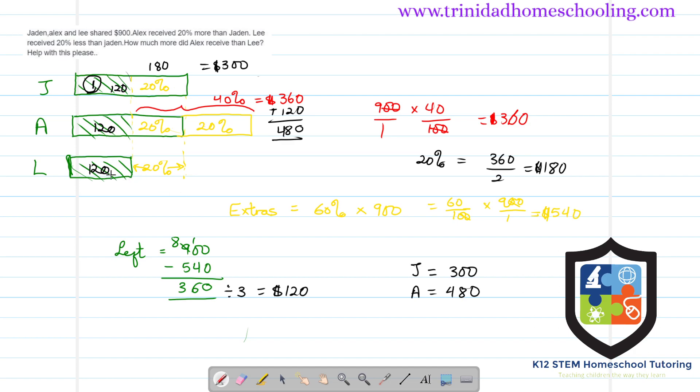And Lee has 120. 8 plus 2 is 10, we carry that 1, 3 plus 1 is 4, 4 and 4 is 8, 8 and 1 is 9. Okay, so the equal portion that was shared between the three of them is 120.